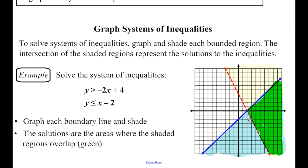So the red dotted line represents the first inequality, the blue solid line is the second inequality, and I've shaded the two regions. The intersection of those two regions is indicated in green, so those are the solutions to the system of inequalities.